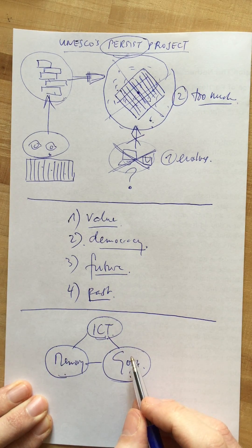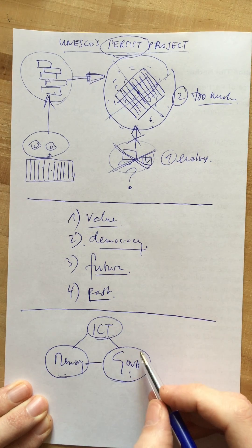What Persist does is it creates a dialogue between these three parties to ask them to work together to find solutions to keep our digital information accessible in the future.